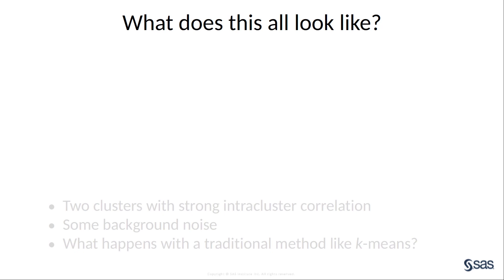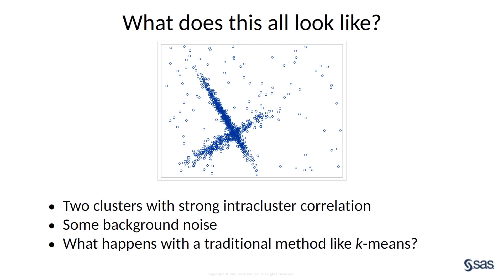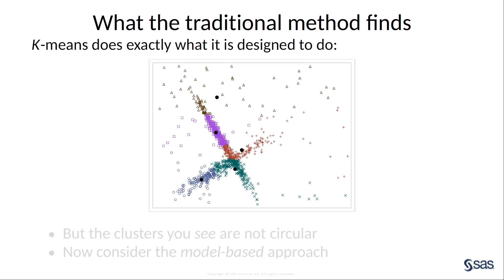What does model-based clustering look like? Here's an example. You see two clusters where there is strong correlation within each cluster — that is the X shape. You also see some points outside the clusters, which represent some amount of background noise. If you use a traditional clustering method like K-Means, K-Means quickly does what it was built to do. The shape and color of the marker indicates the cluster assignment, but the challenge is that K-Means is designed to find the best circular clusters, and the clusters here are clearly not circular.